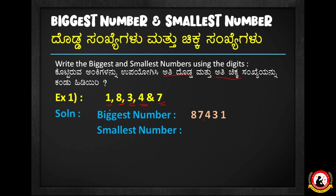The smallest number is formed by arranging digits from smallest to largest: 1, 3, 4, 7, 8. So the answer is 13,478. That is 13,478, which is the smallest number.